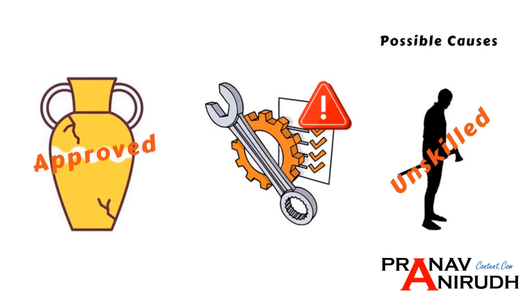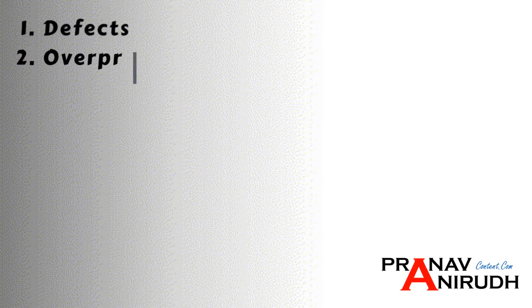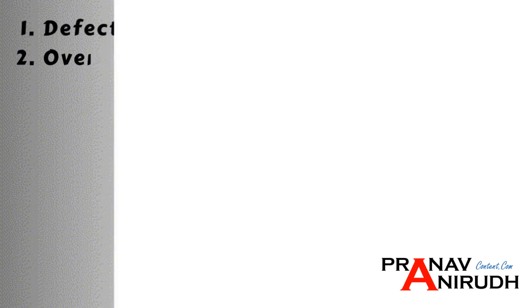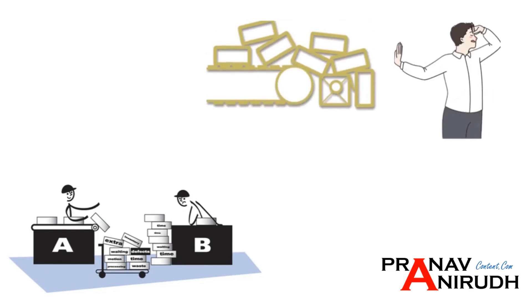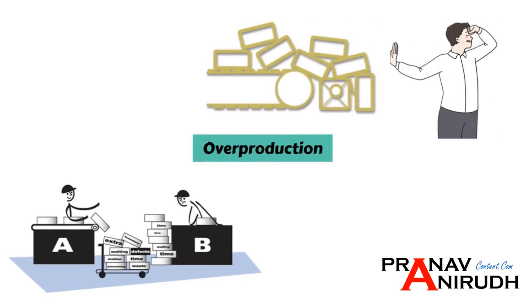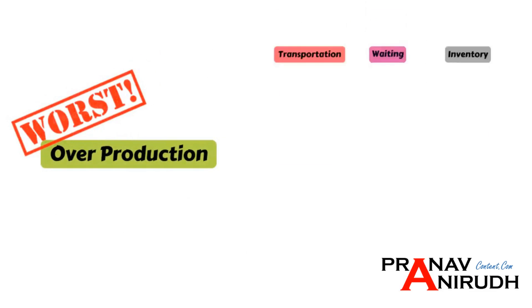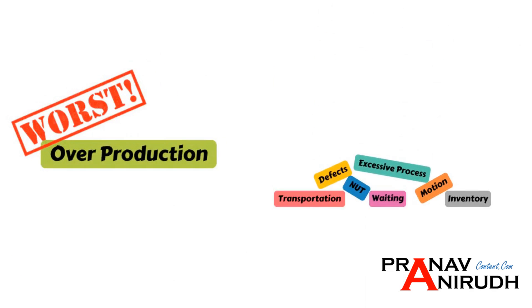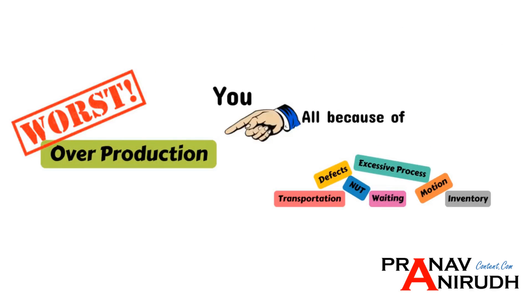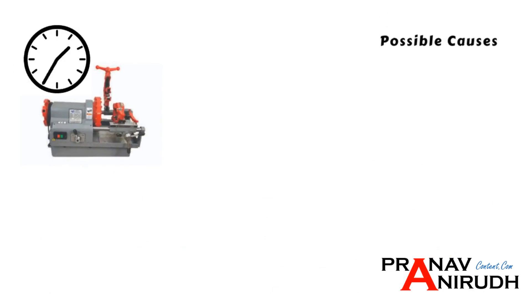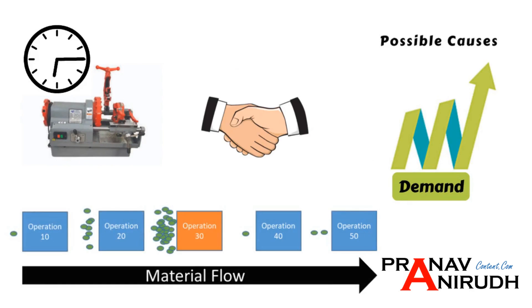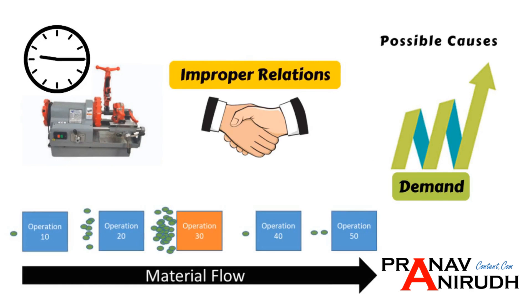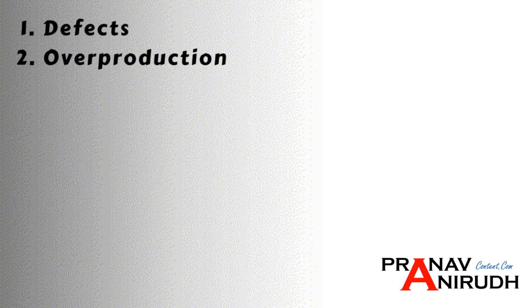The next waste is Overproduction. Production that is made before it is needed by the next operation or by the customer is overproduction. This waste is the worst form of waste among all because it contributes to generating other wastes. Possible causes include high setup times, fluctuating demands, improper line balance, and improper supplier relations.